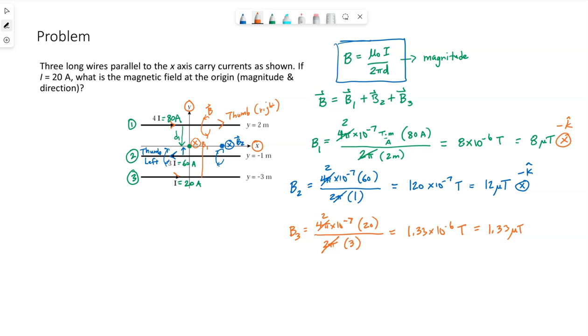So 1.33 times 10 to the negative 6 teslas or 1.33 microteslas direction. So the arrow down here is pointing to the right. If I take the thumb on my right hand and point it to the right, my fingertips are curling this way. So towards me above my thumb, away from me below. The point I care about is on this side up here. It's above the wire. So tangent to that circle would point out at me. That would be the positive z direction.